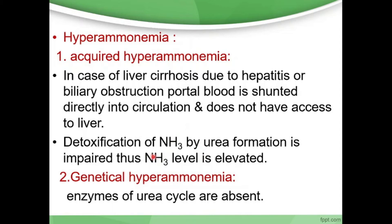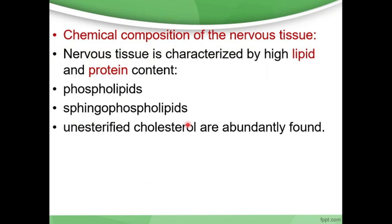Genetically, hyperammonemia occurs because the enzymes of the urea cycle are absent. We have now finished the topic of ammonia, and we start with the nervous tissue — specifically the chemical composition of the nervous tissue. Nervous tissue is characterized by high lipid and protein content.